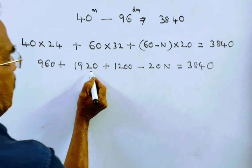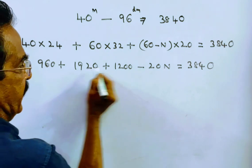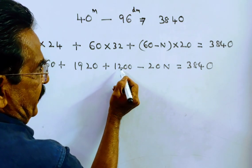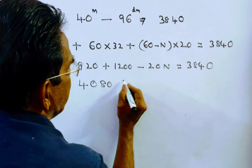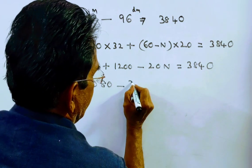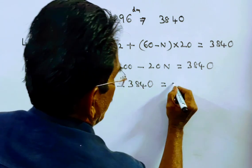960 plus 1920, that's 2880. 2880 plus 1200, 4080. 4080 minus 3840 is equal to 20n.